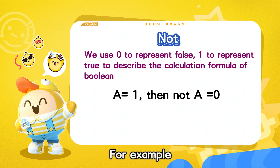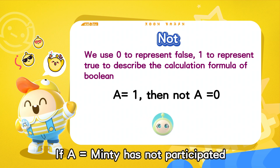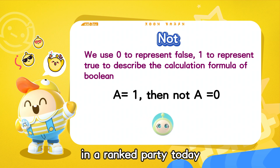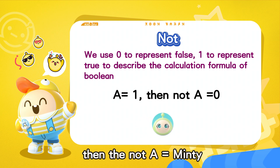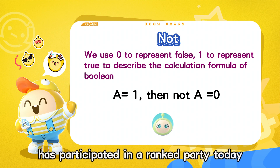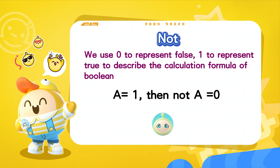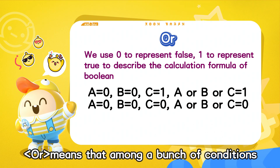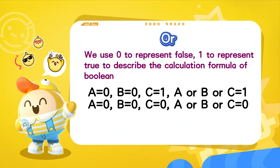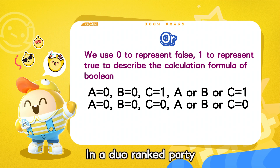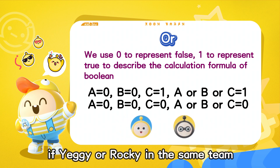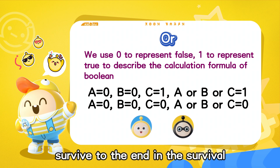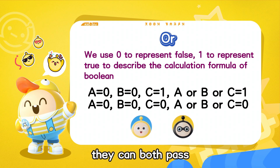For example, if it equals that Minty has not participated in a ranked party today, then the not of that equals Minty has participated in a ranked party today. Or means that among a bunch of conditions, as long as one is met, the output Boolean is true. For example, in a duo-ranked party, if Eggy or Rocky in the same team survive to the end in the survival, they can both pass.